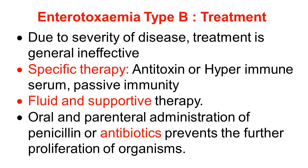Here we discuss the important part — Treatment of Enterotoxemia Type B. The disease is so severe, causing hemorrhagic enteritis, dehydration, acidosis, hemorrhage in the intestine, toxemia, shock, and death, that treatment is generally ineffective. Specific therapy — antitoxin or hyperimmune serum — provides immediate passive immunity. Fluid and supportive therapy correct dehydration and acidosis. Oral and parenteral antibiotics are advisable to prevent further proliferation of Clostridium and halt disease progression.